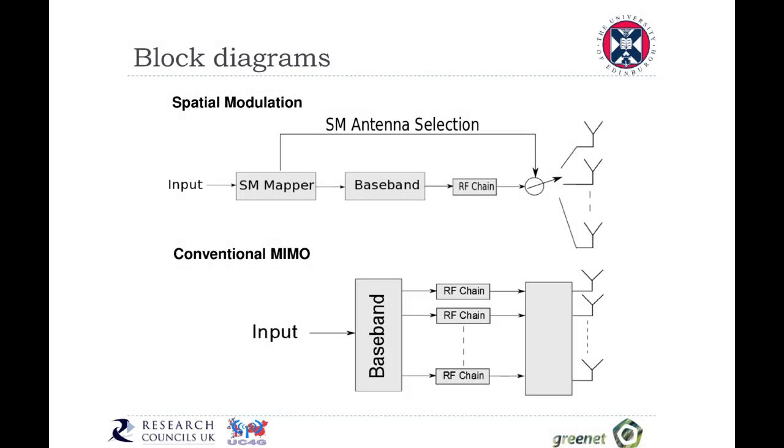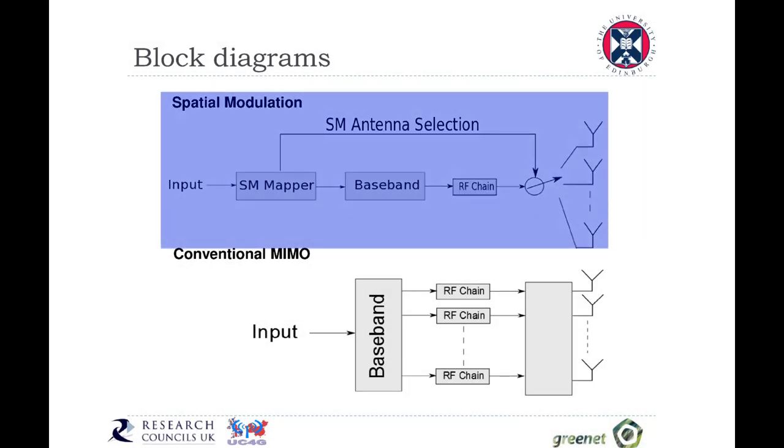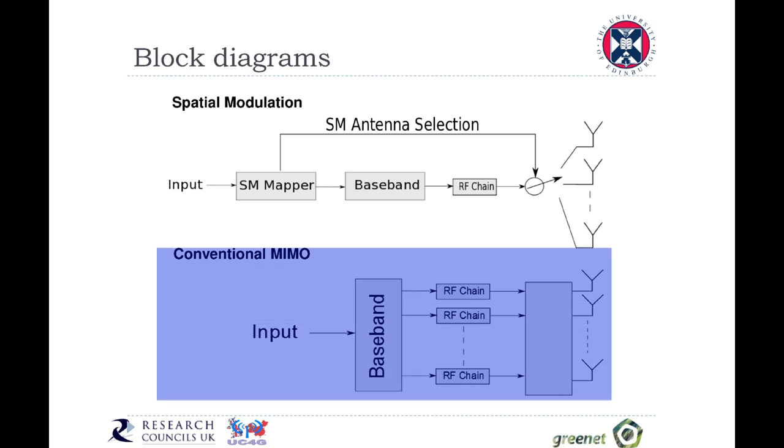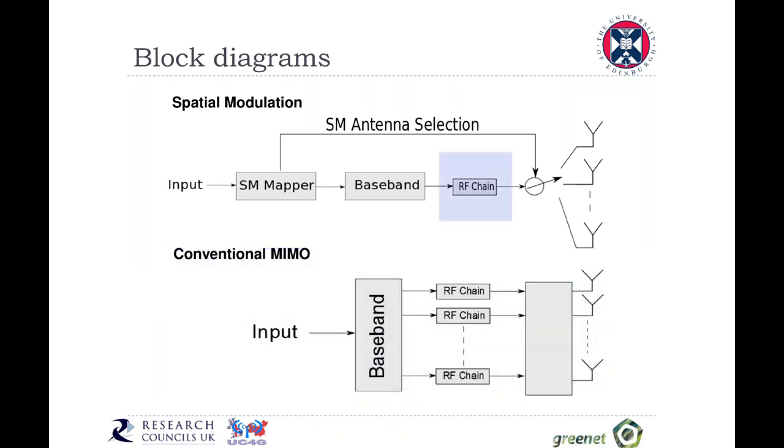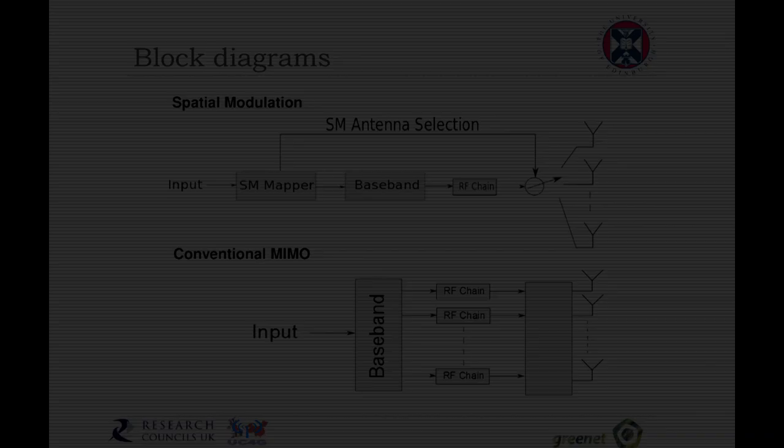So what we have here are the principal block diagrams of spatial modulation and conventional MIMO systems. What we notice is that in spatial modulation, we require only a single RF chain, whereas in conventional MIMO systems, we require multiple RF chains.